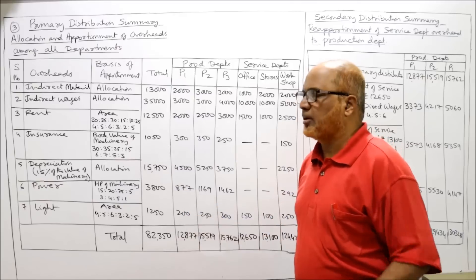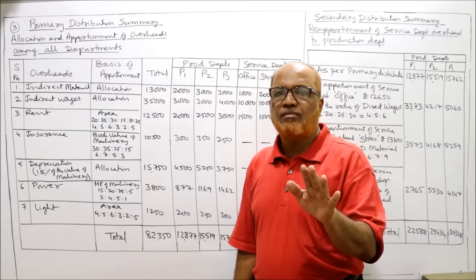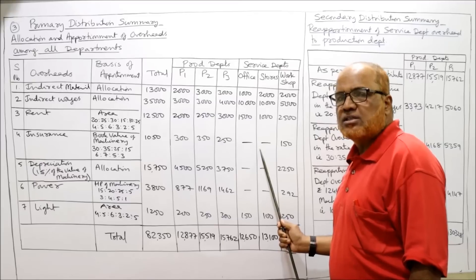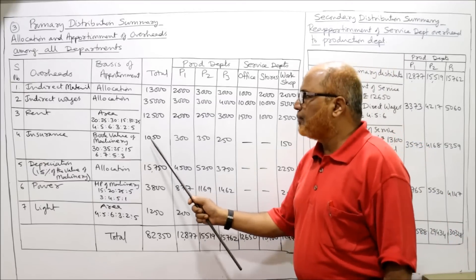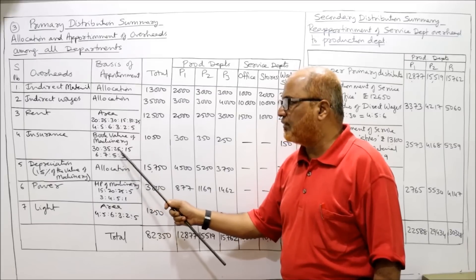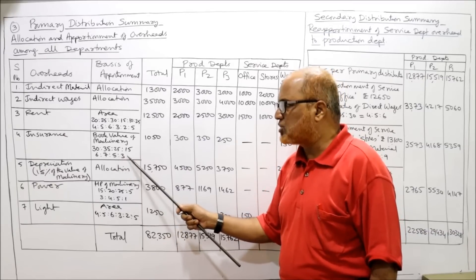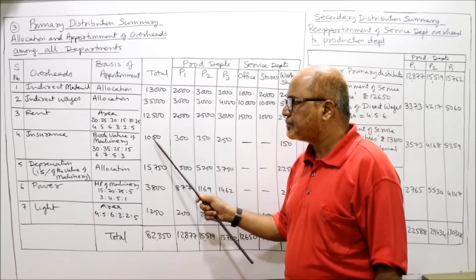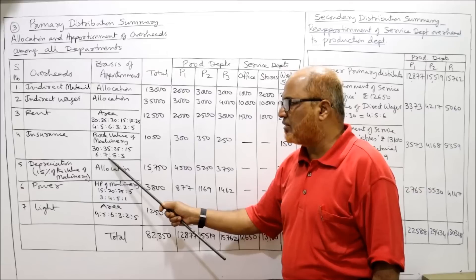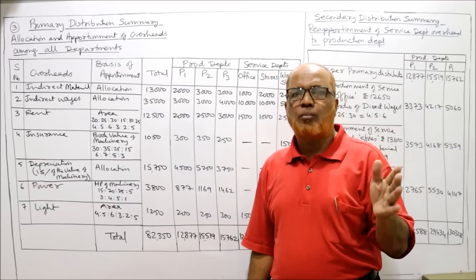Insurance 1,050: machinery is given for P1, P2, P3, and Workshop only — no machinery for Office and Stores, so those get a dash. Insurance is apportioned on the basis of book value of machinery. The book values give the ratio 30:35:25:15, simplified to 6:7:5:3 (total 21). So 1,050 is divided as 6/21, 7/21, 5/21, 3/21 for P1, P2, P3, and Workshop respectively.